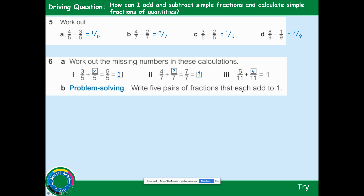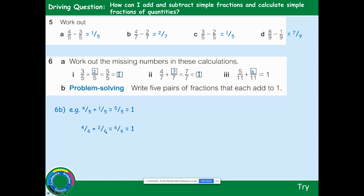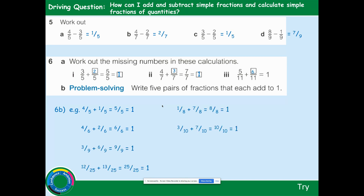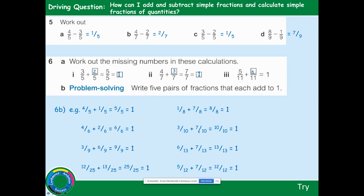Write down some pairs of fractions that total 1 — any numbers where the total of the numerators equals the denominator. For example: 4 fifths add 1 fifth equals 5 fifths, which equals 1. Another example: 4 sixths add 2 sixths equals 6 sixths — the numerator and denominator are the same, so it equals 1. 1 eighth add 7 eighths: 1 add 7 is 8, so 8 over 8 equals 1.